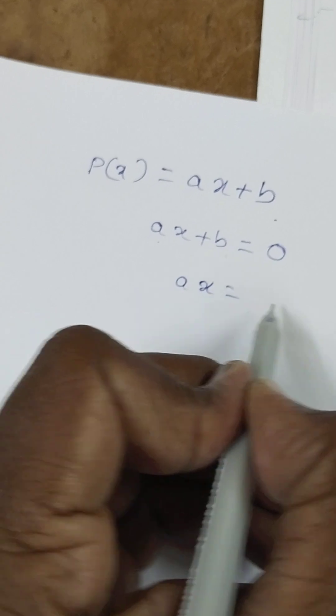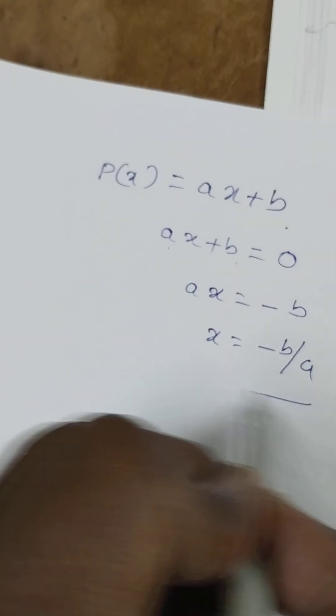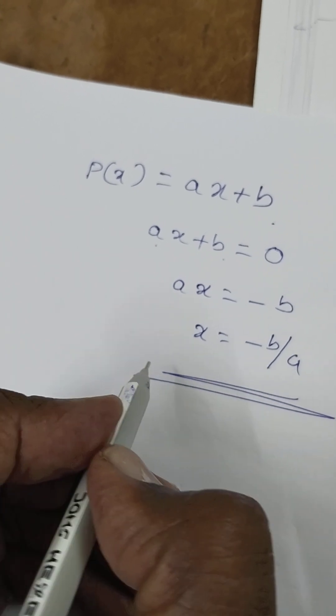So ax is equal to minus b, and x is equal to minus b by a. This is the zero of the polynomial.